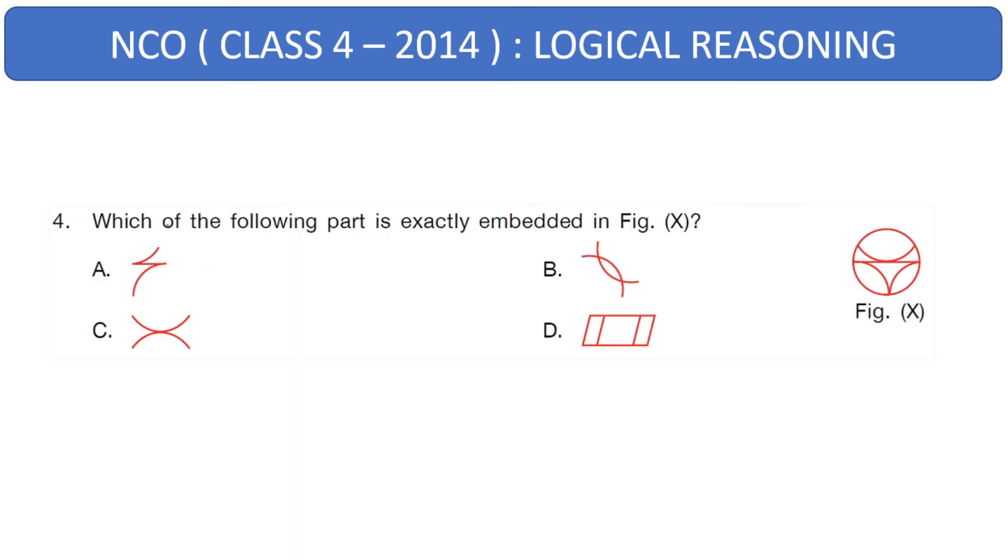Next question says, which of the following part is exactly embedded in figure X? This is the figure here and these are some options we need to choose from. Clearly, there is no quadrangle and there is no intersection, so we can eliminate B and D. Also, there are no curves joining together. Hence, you can eliminate C also. The right option is option A, which you can see here.